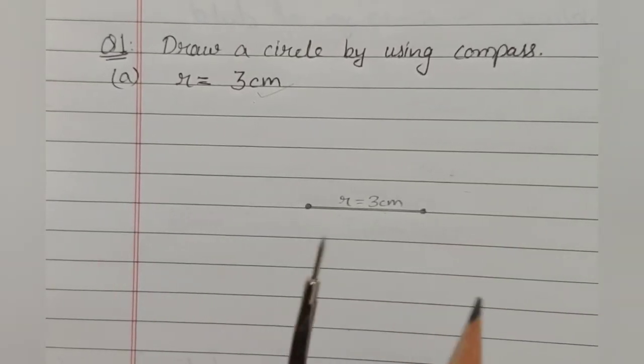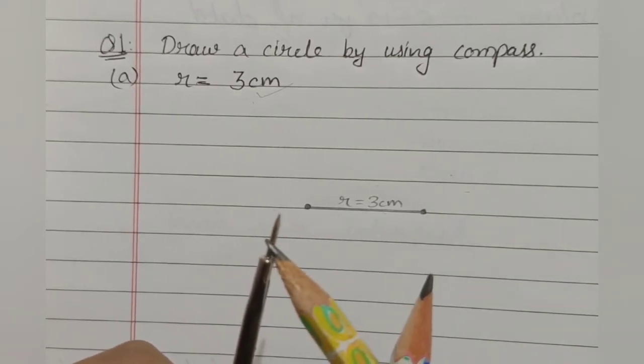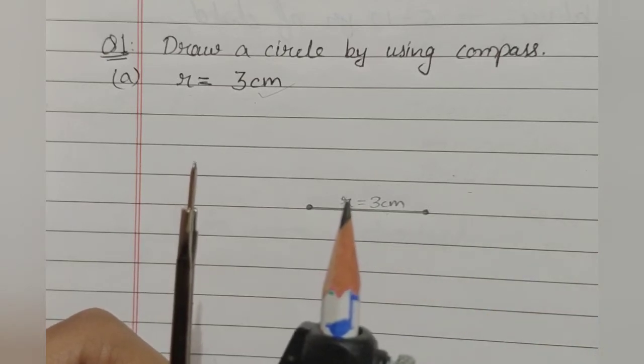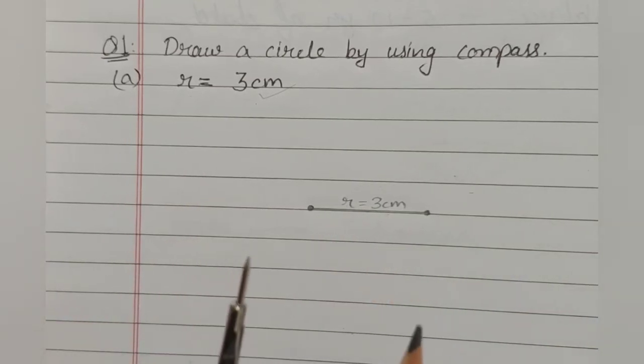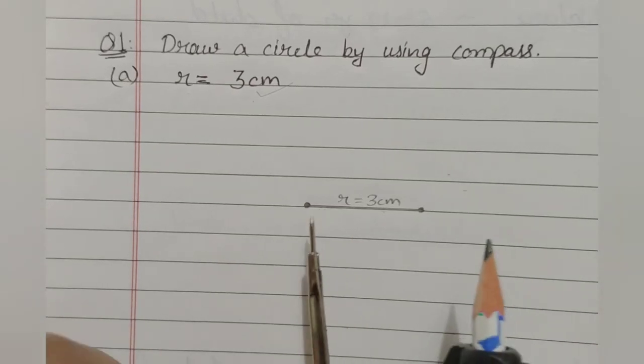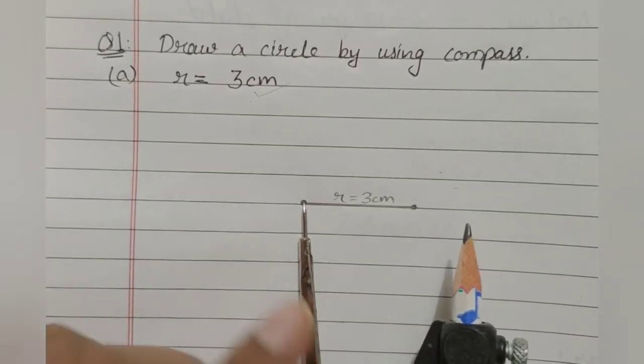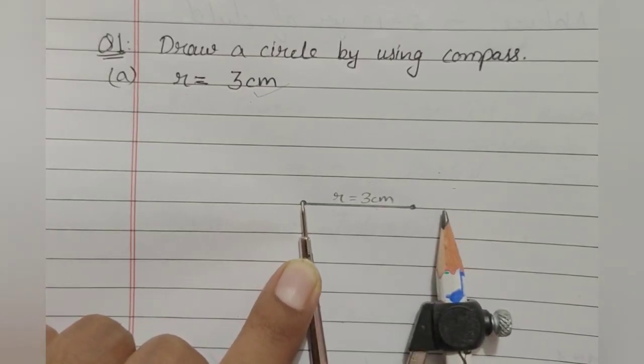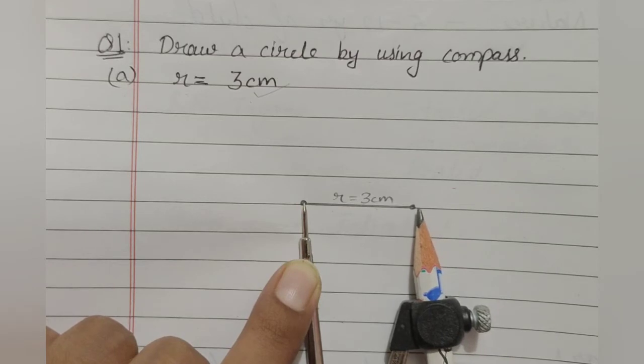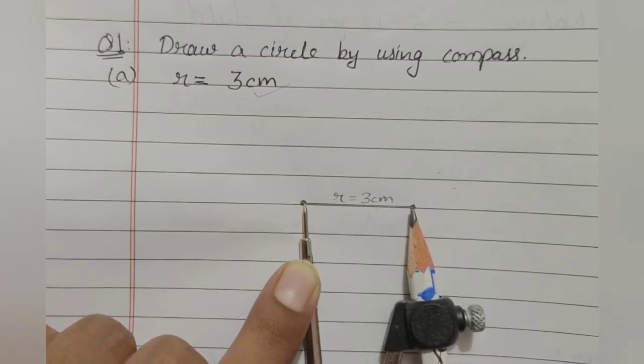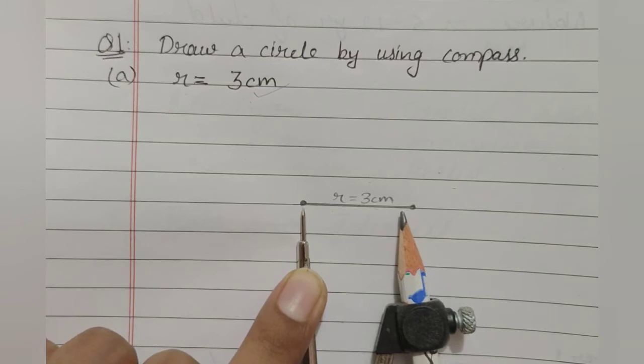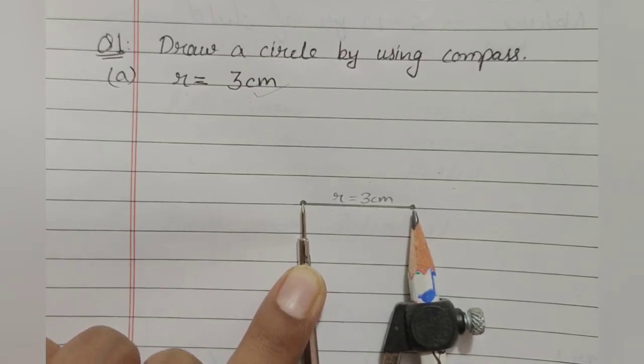So, for a center, you have to use this nib. And to draw the circumference, we will use this pencil. Clear? Now, let's see how to do it. So, put this metallic nib here and adjust your compass so that the distance of this pencil would be exactly at 3 cm. Like this. Not like this. Not like this. Just exactly at the distance of 3 cm from this point.